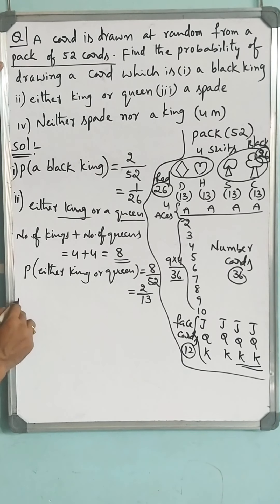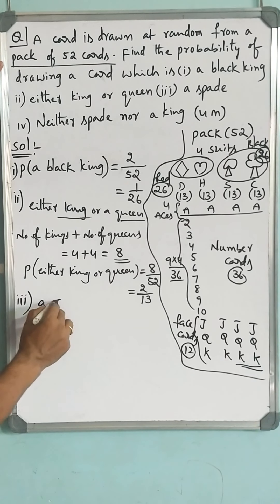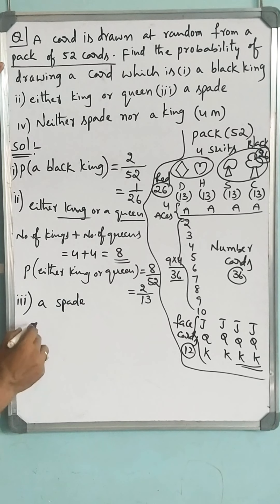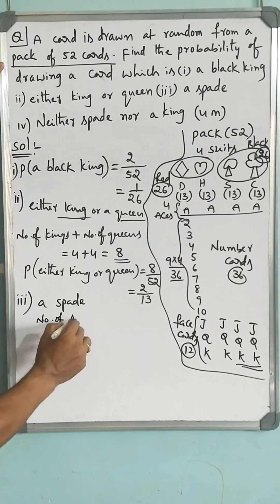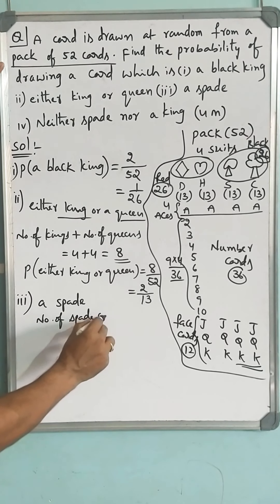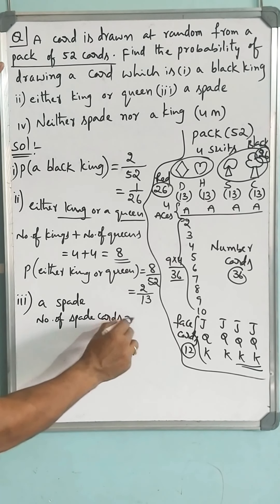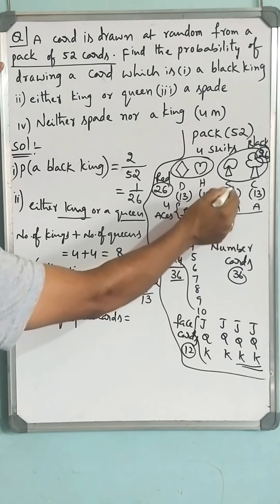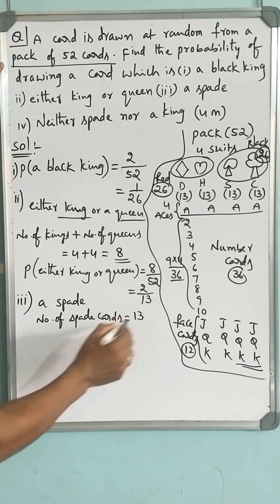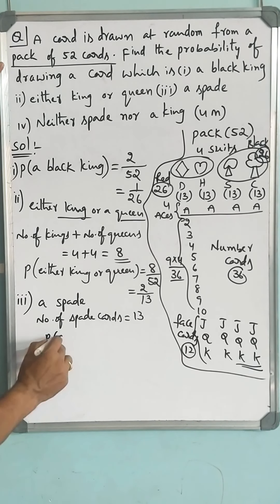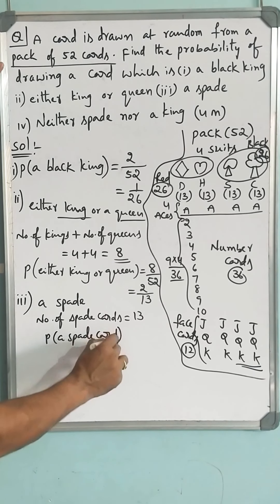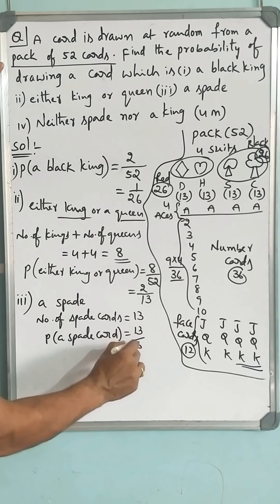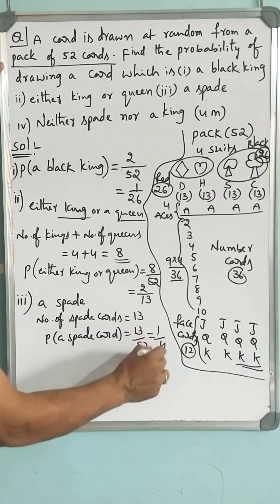Number 3: a spade card. How many spade cards are there? There are 13. Therefore, probability of getting a spade card = 13/52 = 1/4.